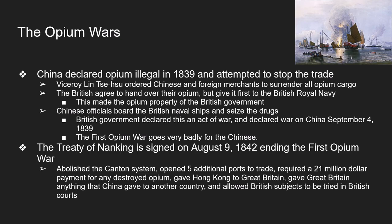Great Britain was given Hong Kong and kept it all the way until 1999. Great Britain was also to be given anything that China gave to other countries — so if Japan got a concession, Great Britain got one too. And last but not least, the Treaty of Nanking let British subjects be tried under British courts, regardless of whether the crime happened in China or not.